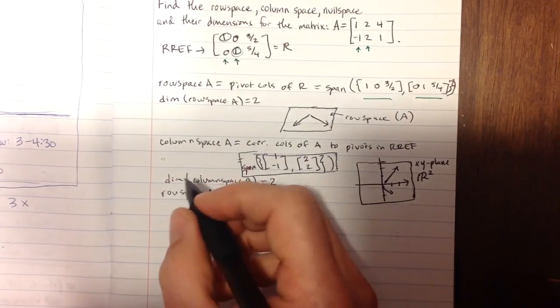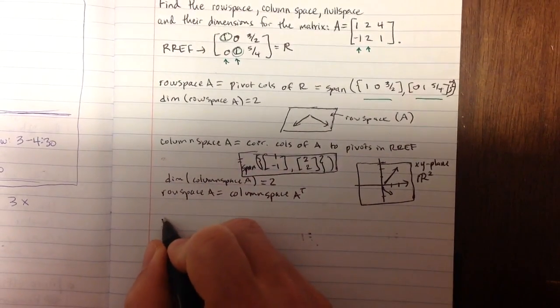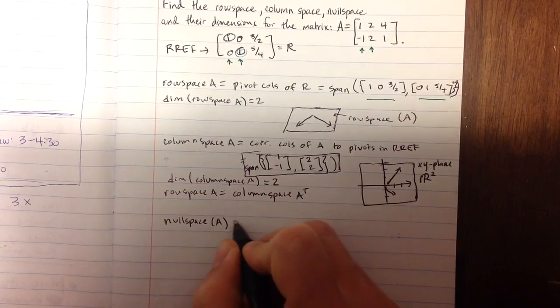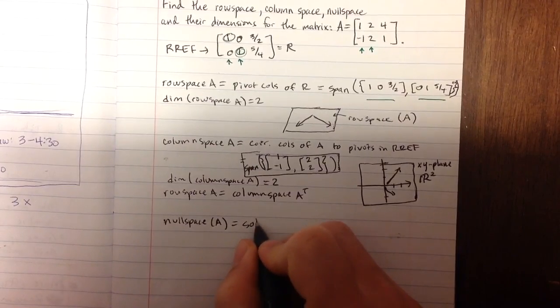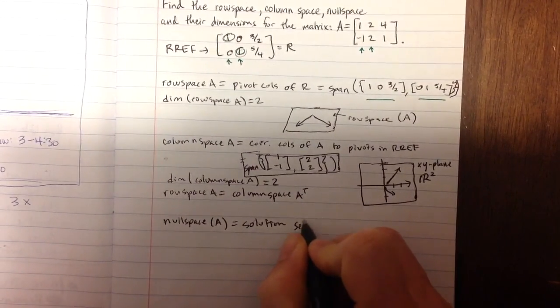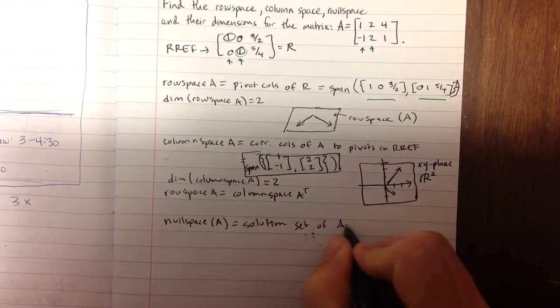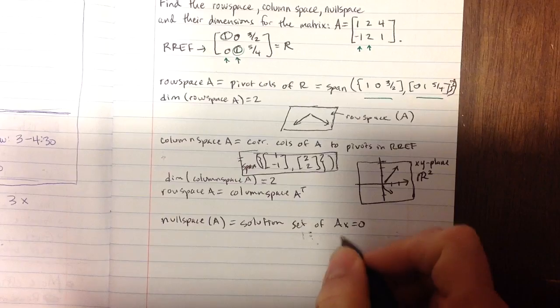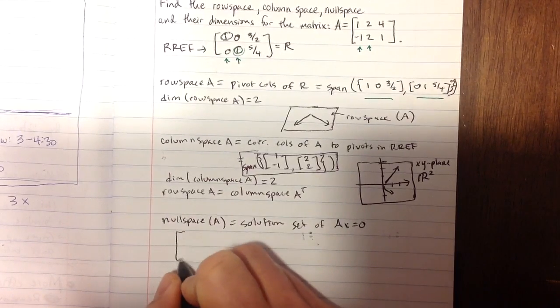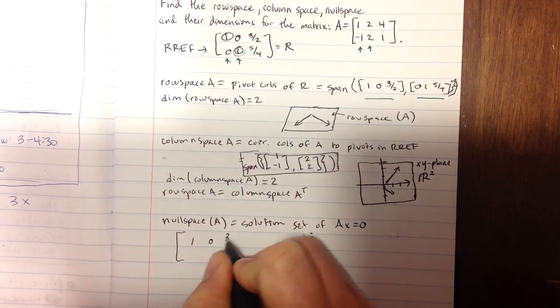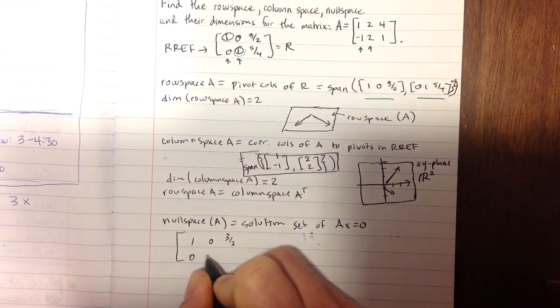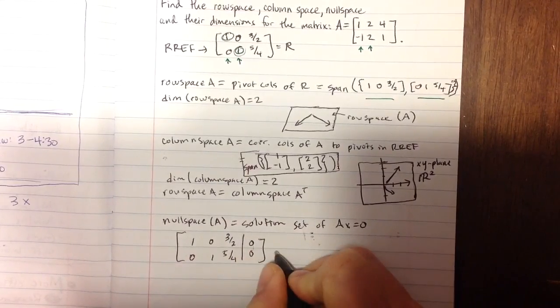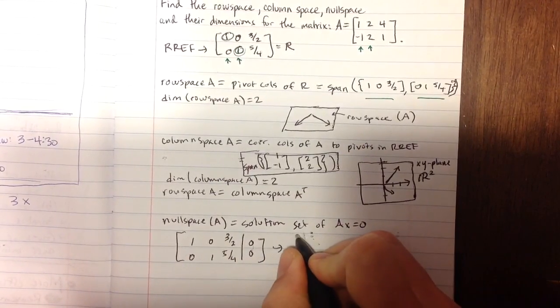The last thing to find is the null space. The null space is equal to the solution set of AX equals 0. I'm going to use RREF again to find this. I have my reduced row matrix here: 1, 0, 3 halves, and 0, 1, 5 fourths. When I augment that with 0, I have my two pivots, and I'm going to solve for them.